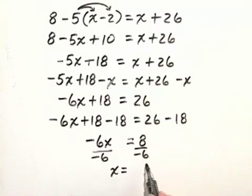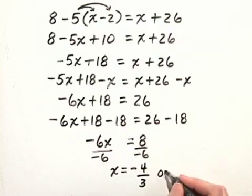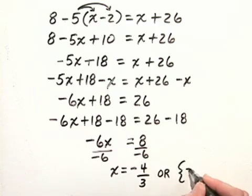Let's simplify that. At the same time I simplify it, I'm simply going to move the negative sign up to the numerator, because that's standard. We'll divide both the numerator and denominator by 2, and our solution is that x is equal to negative 4 thirds, or we can write the solution set negative 4 thirds.